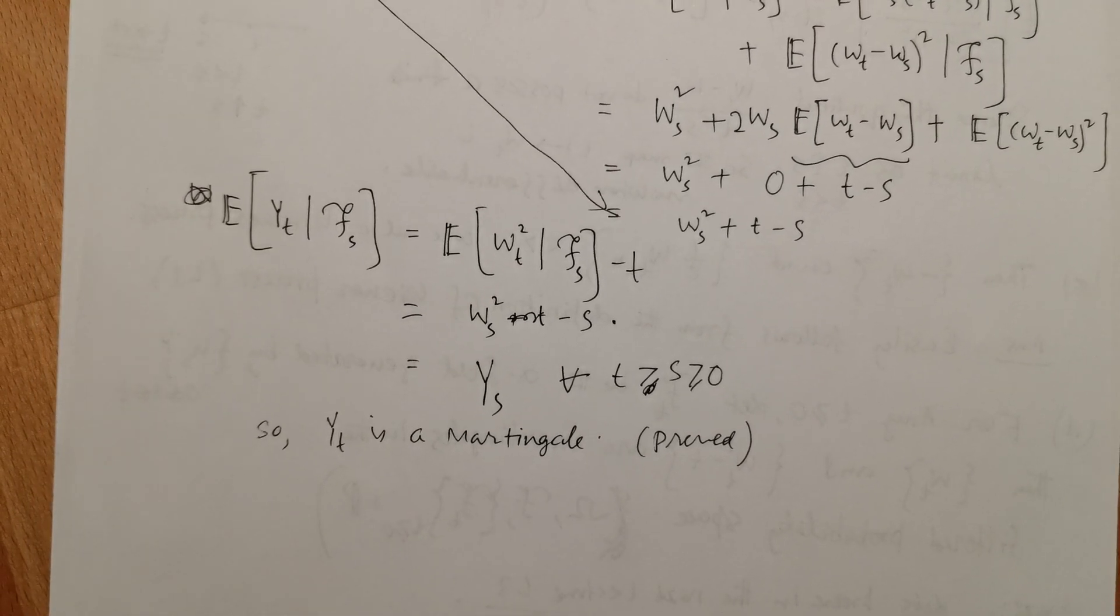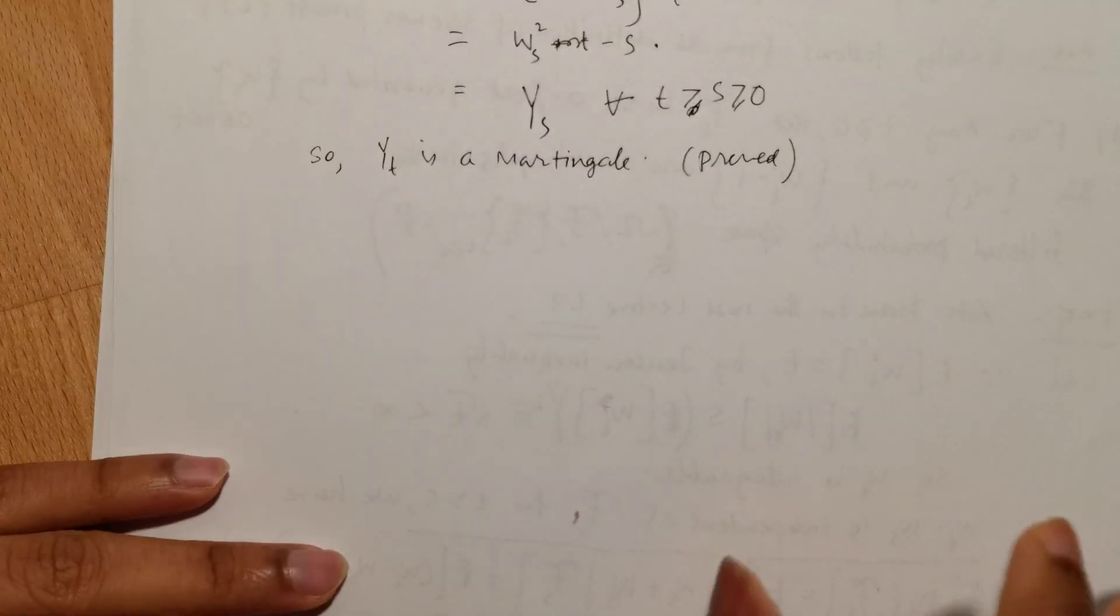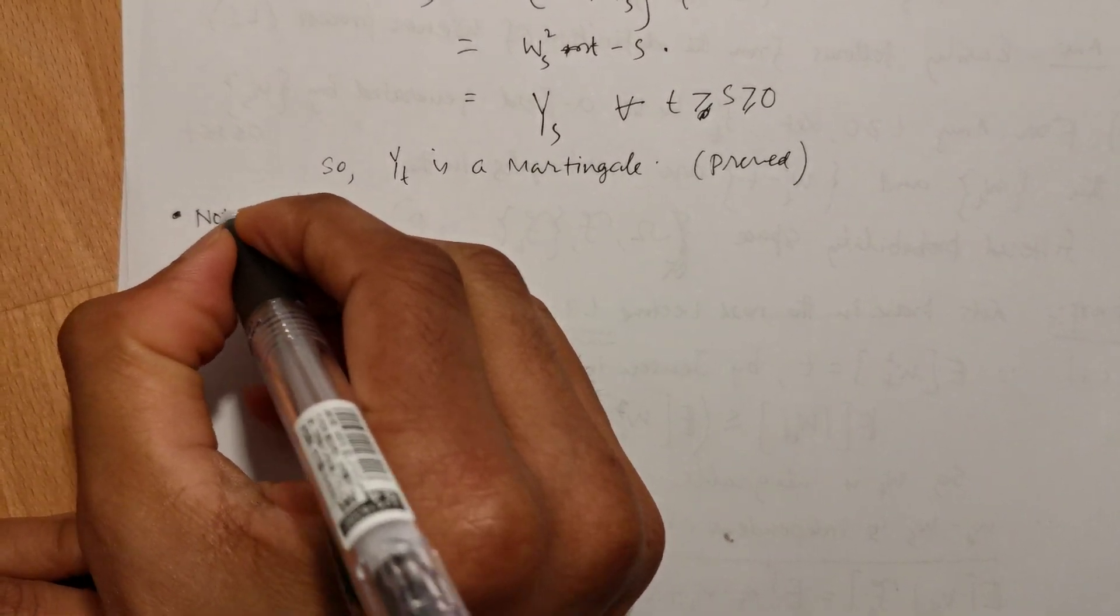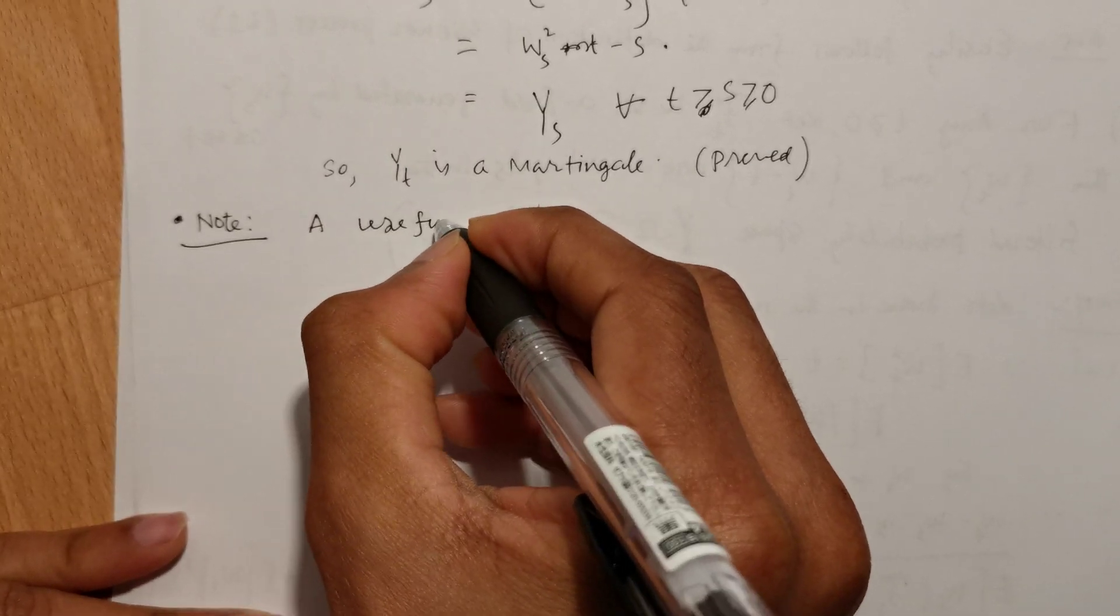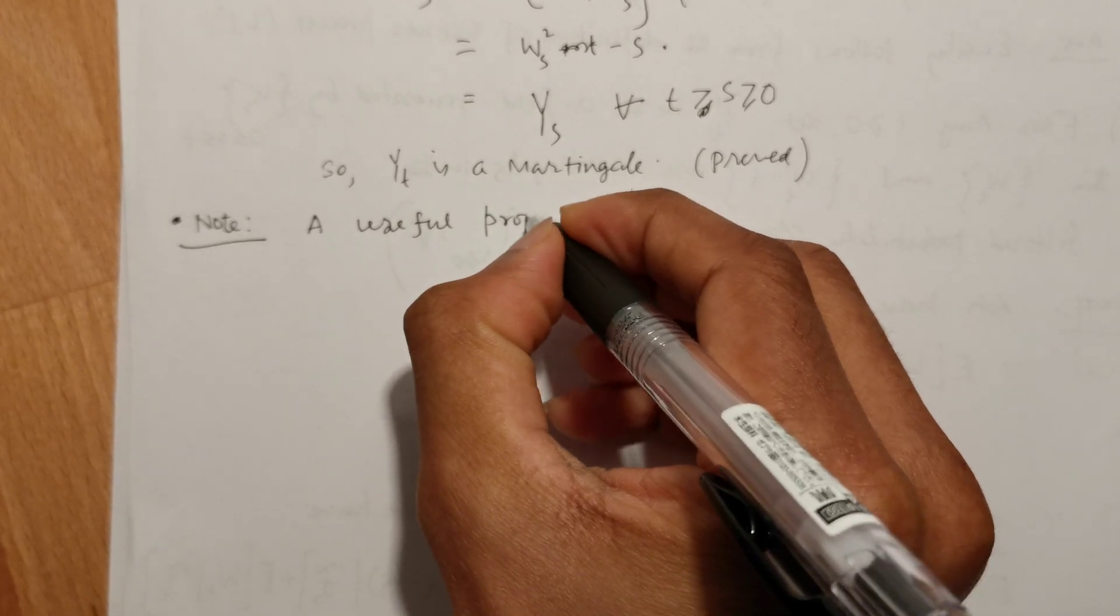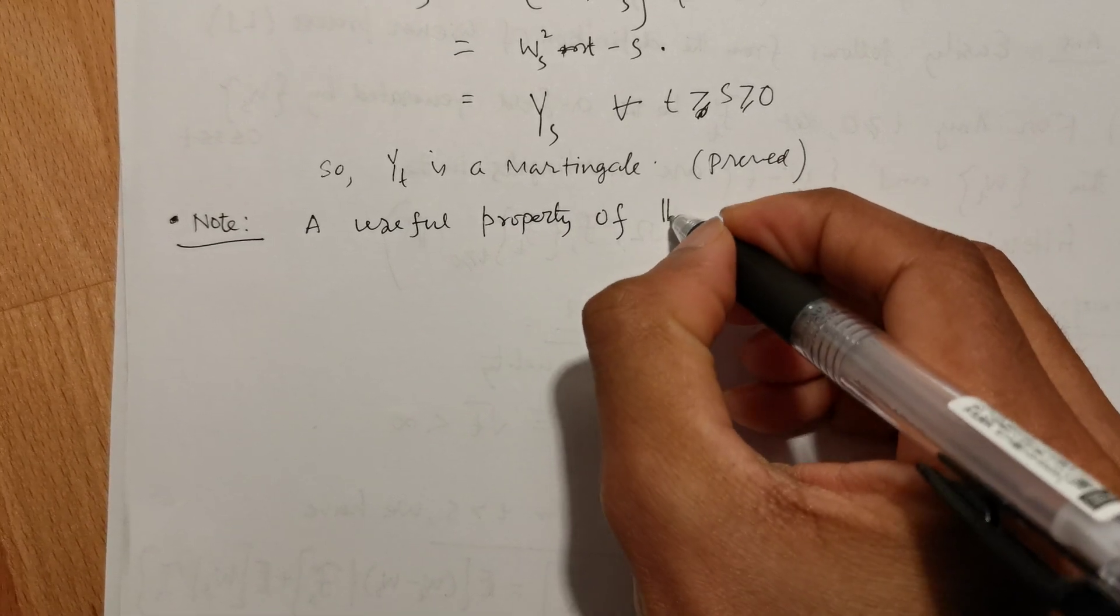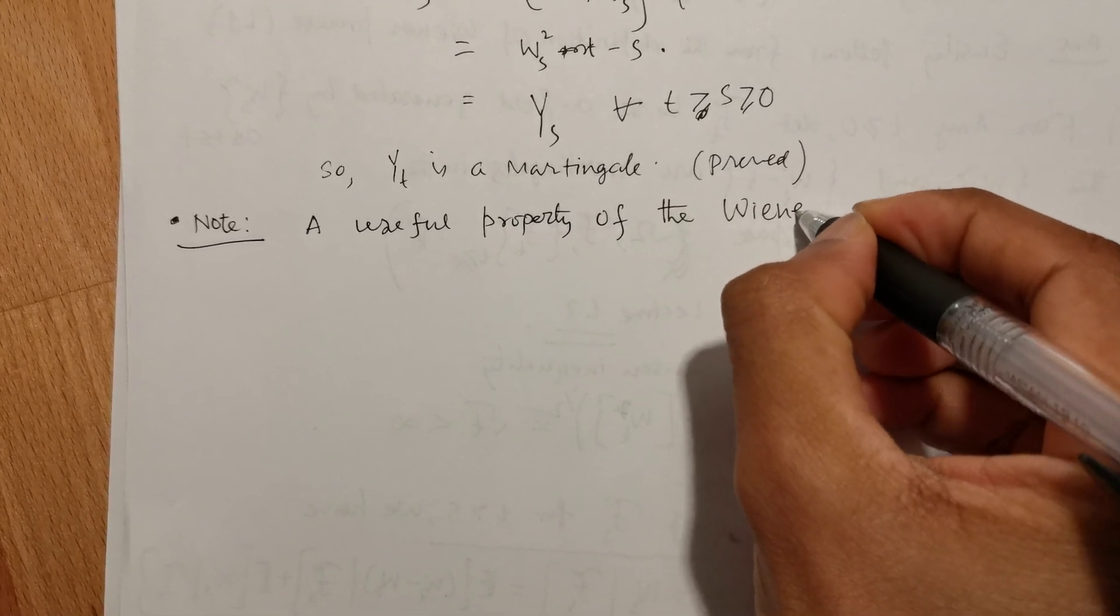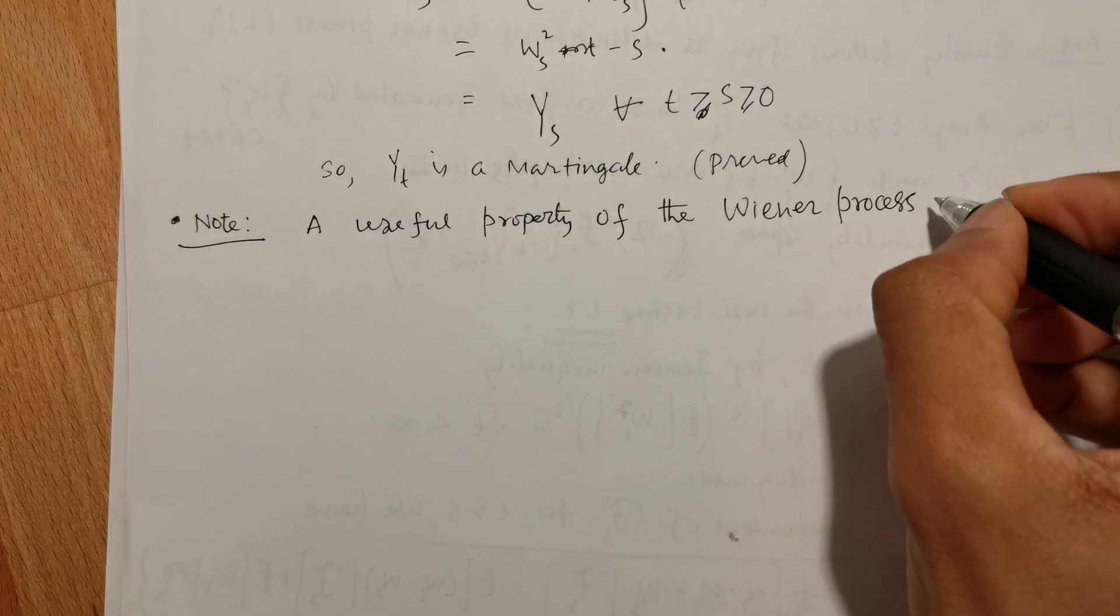One remark: A useful property of the Wiener process is the following asymptotic behavior whose proof we do not discuss here.